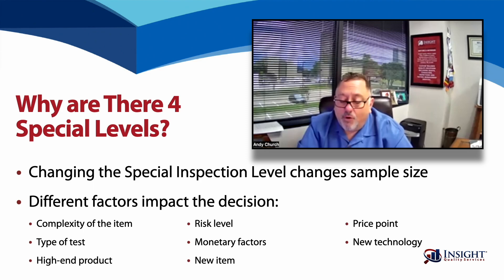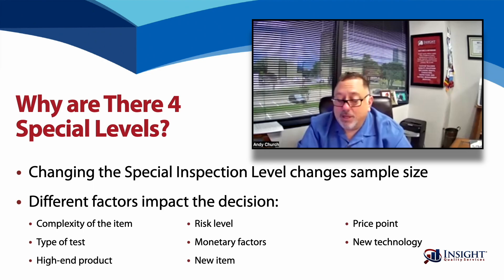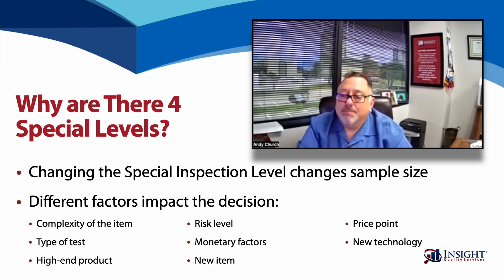Using a level four, which is more stringent, the sample size would be 32. Different factors dictate which special inspection level to use — the complexity of the item, possibly the test, the price point, whether it's a new technology. It's not all about monetary factors when it comes to risk. In most cases, we use S2 as the starting point for special level inspection testing.